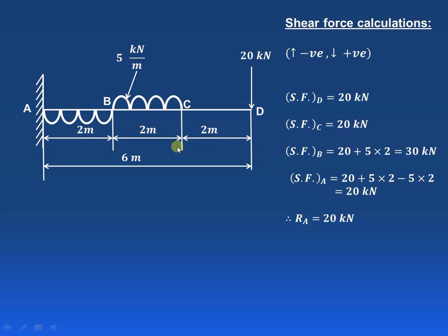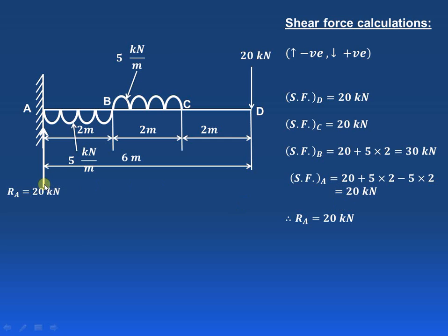Shear force at A will be equal to 20, then 5 into 2 from the downward UDL, and then 5 into 2 from the upward UDL, which gives a negative sign. So the total shear force at point A will be 20 kN, and therefore we can say that the reaction at A is also 20 kN.